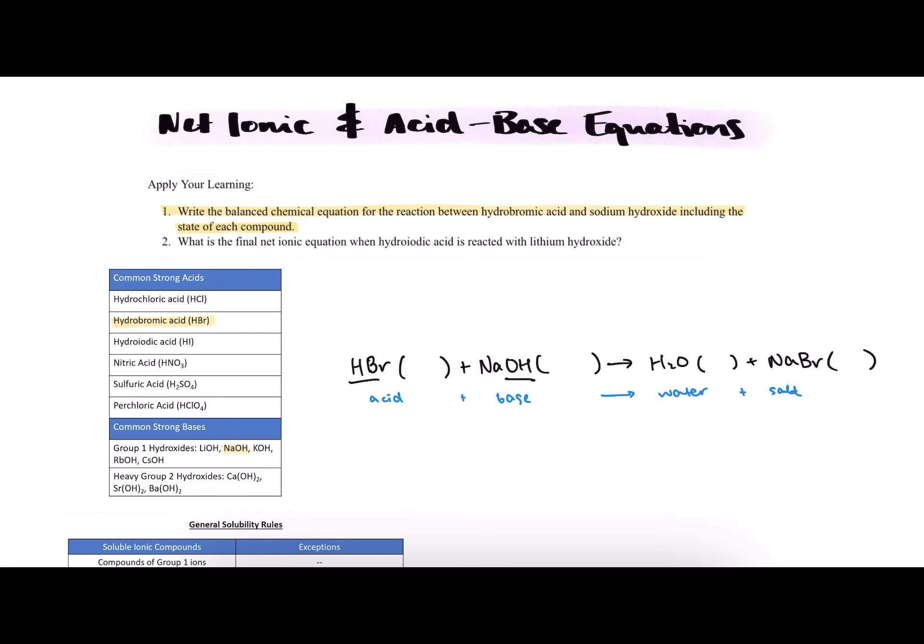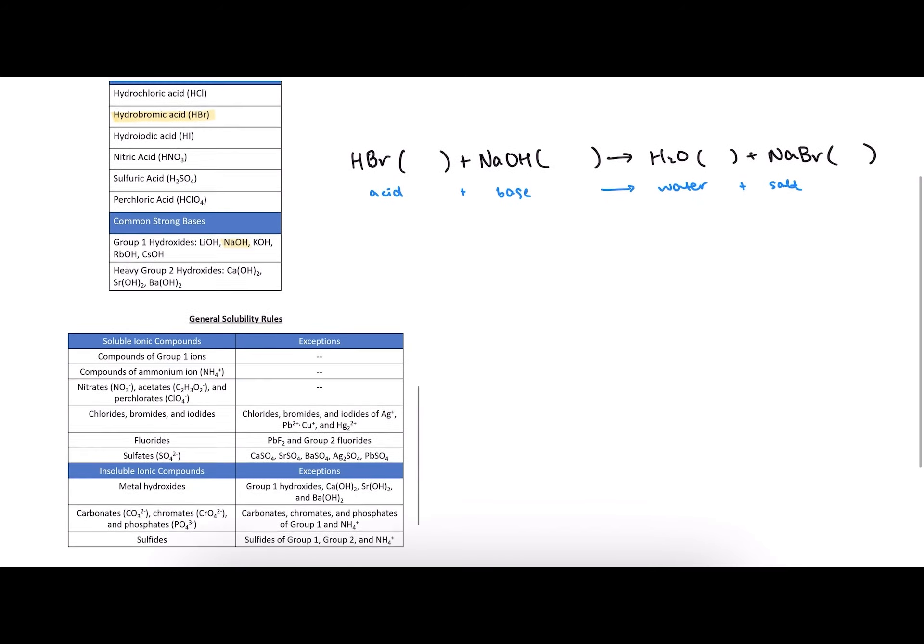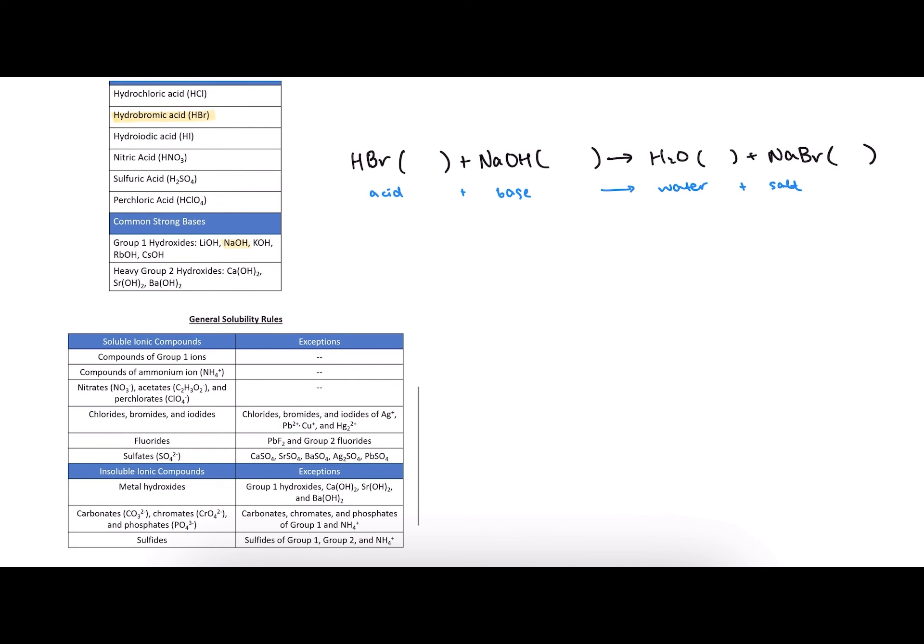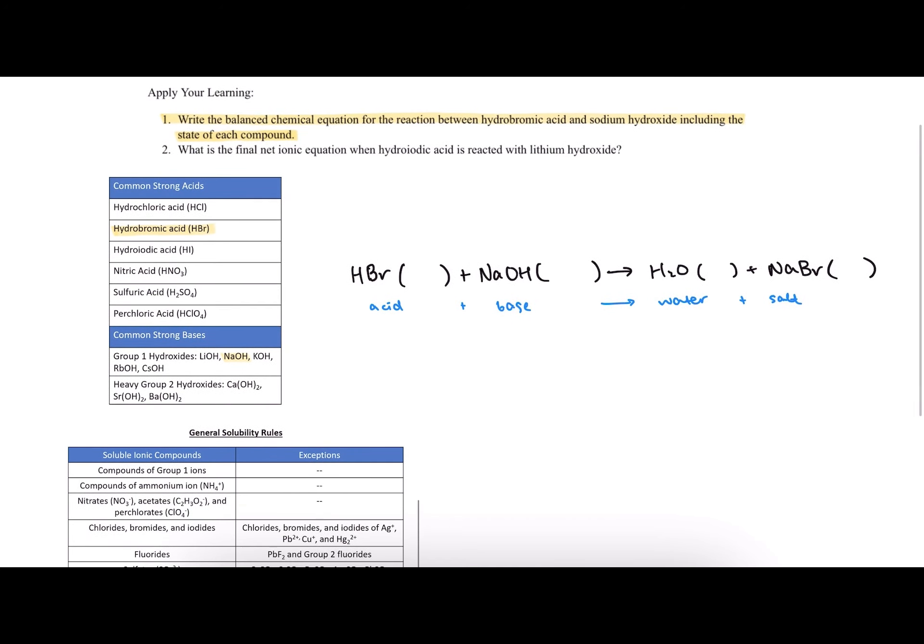Now that we've filled out the entire equation, we can refer to our general solubility rules below to figure out what the state of each compound would be. So if a compound is soluble, it will be in the aqueous state because when a compound is present as its component ions, it is known to be in the aqueous state.